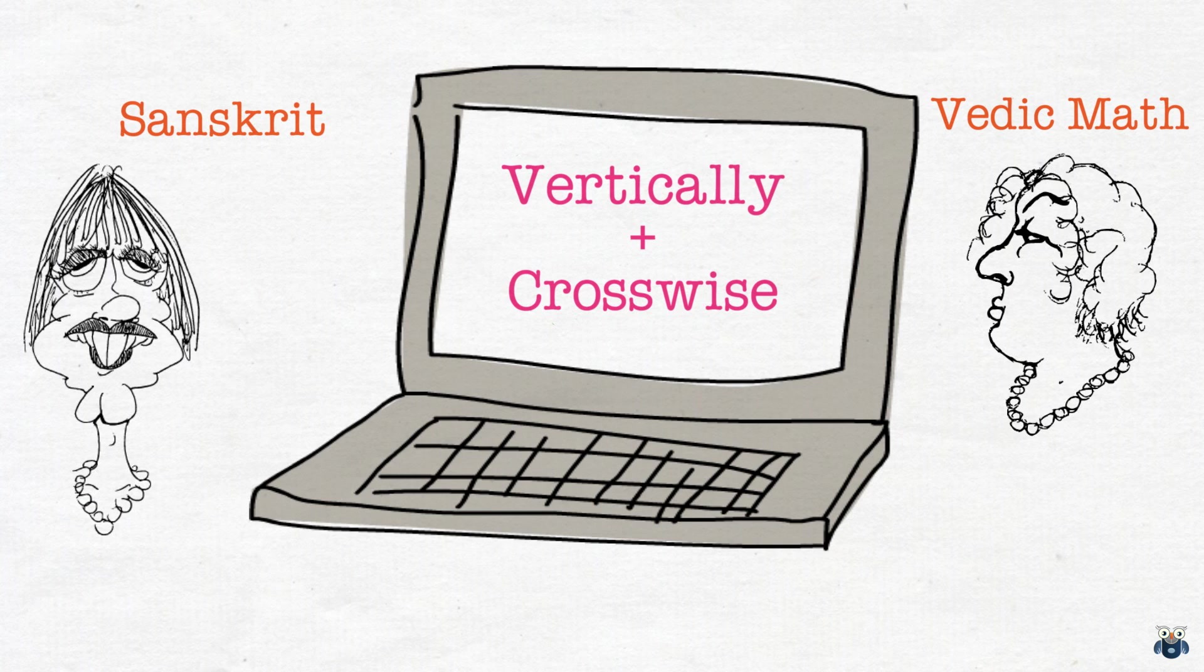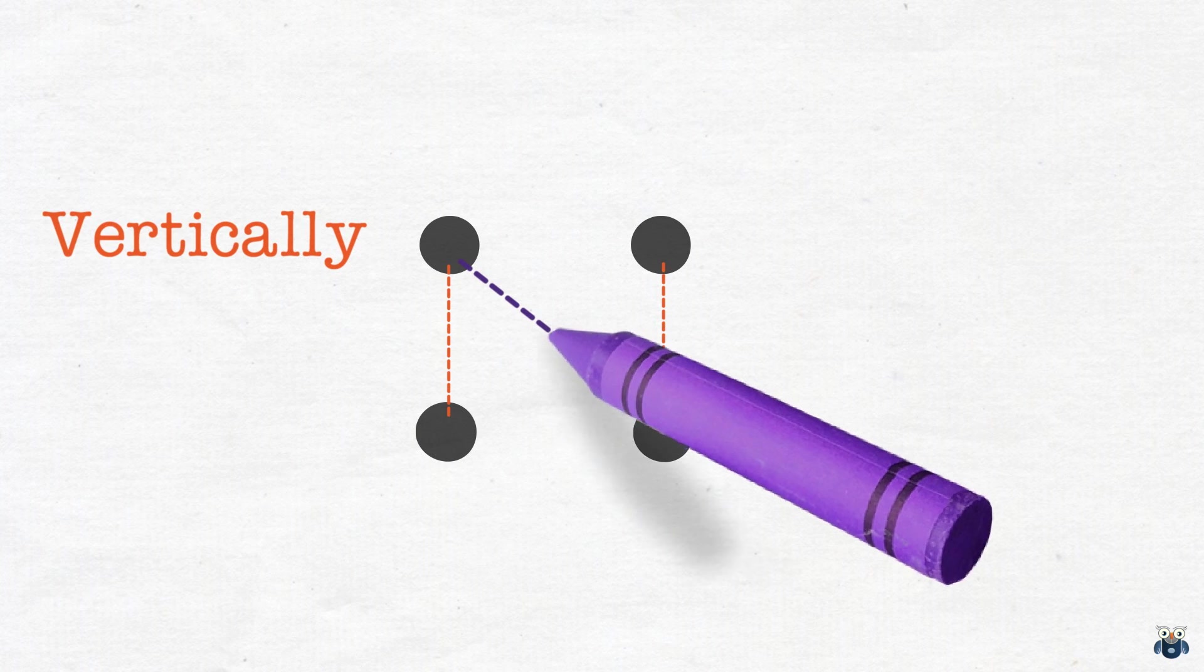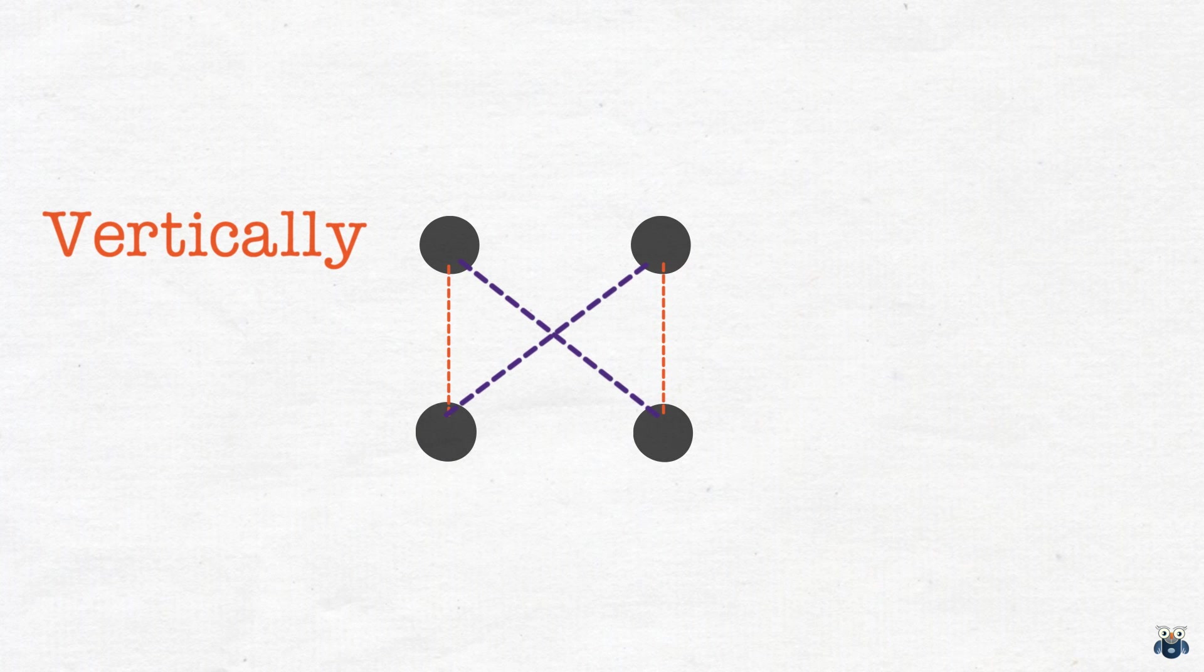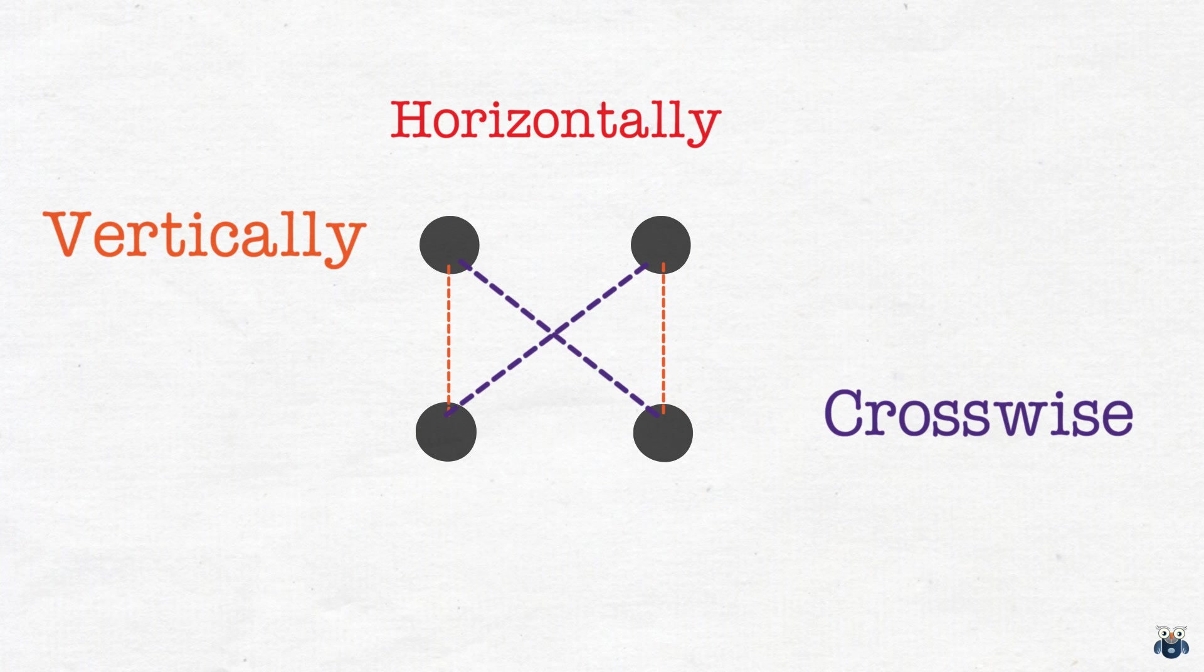Alright, let's get back to our method. We said that the loose translation of our method was vertically and crosswise. So what does that have to do with multiplying numbers? Let's find out. Consider these four dots. They can be connected vertically in two ways like this and they can be connected crosswise in two ways like this. These dots could also be connected horizontally but that is not the subject of this discussion. Please make a note of this point. Now let's use this concept to multiply two-digit numbers.